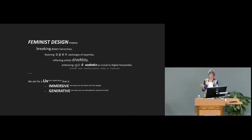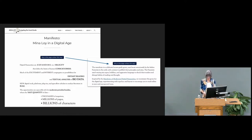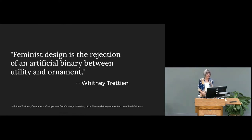We shared our digital humanities custom theme with anyone who wanted to adapt it, though it's already no longer compatible with current PHP. True to modernist manifesto form, we played with font size and layout to create a synergy between form and content, but we didn't assume readers would know what the modernist manifesto form was. Instead, we invited them into understanding by adding a button that says 'Why is this page written this way?' — which provides a description of the history of the modernist manifesto. Feminist design is, as Whitney Tretien says, the rejection of an artificial binary between utility and ornament.